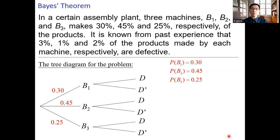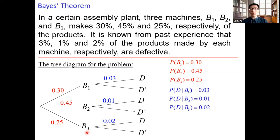Once the product is made, it can be defective or non-defective. If the product is made by machine b1, 3% is defective, so we write probability 0.03 along the path from b1 to d. Similarly, 1% of products made by machine b2 are defective, and 2% made by machine b3 are defective. So p of d given b1 is 0.03, p of d given b2 is 0.01, and p of d given b3 is 0.02.